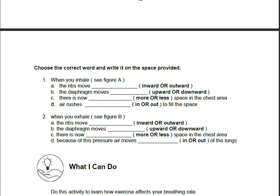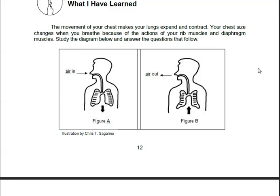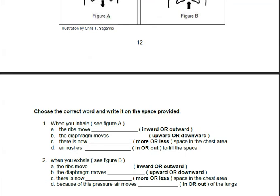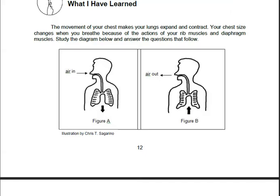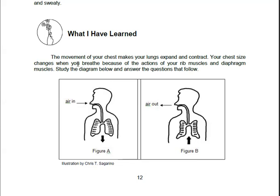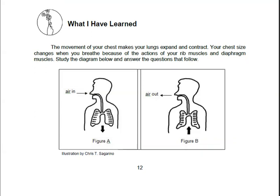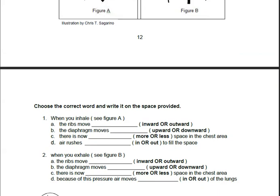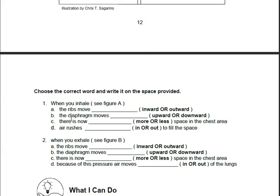Okay. So in your answer sheet, write What I Have Learned and then the title for this. Just indicate there: What I Have Learned, under Lesson 3. Write What I Have Learned, Lesson 3, and then answer here. Copy and answer.